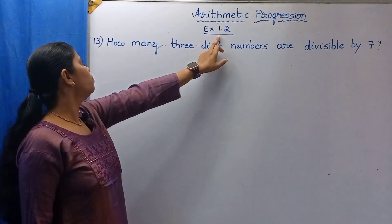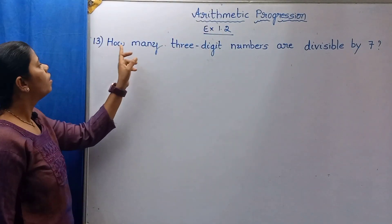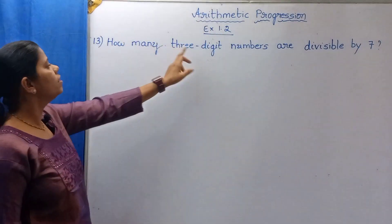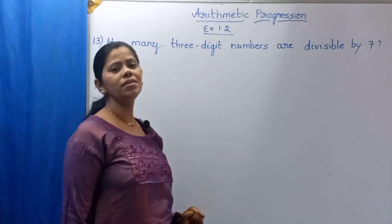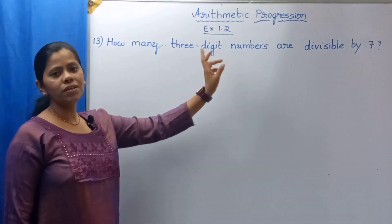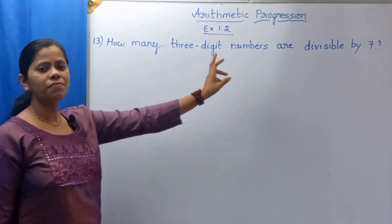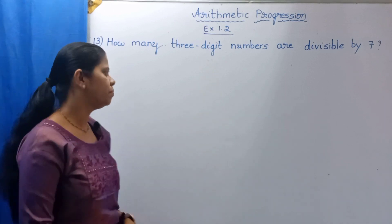Exercise 1.2, thirteenth question: How many 3-digit numbers are divisible by 7? Before solving this problem, let me give a simple example.